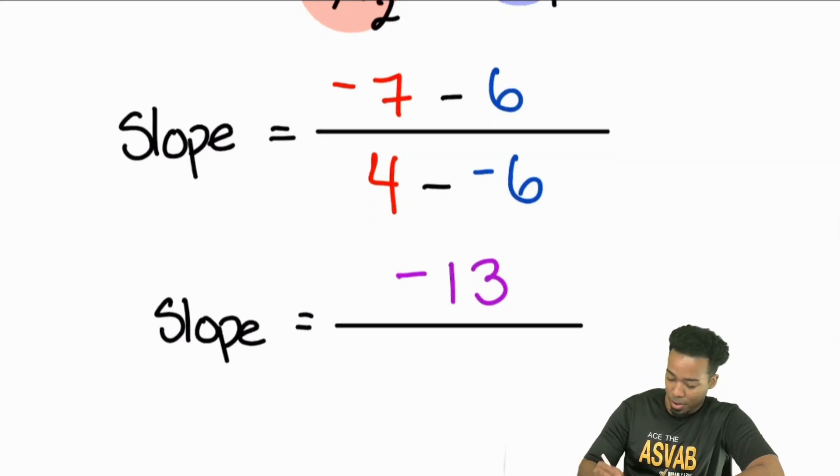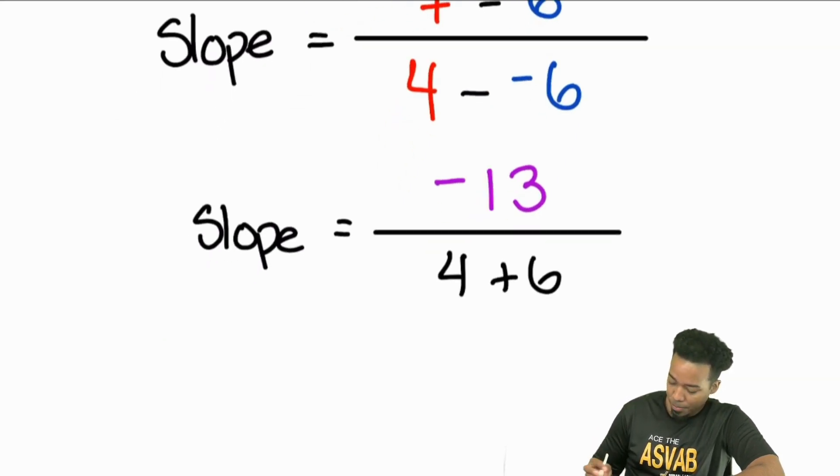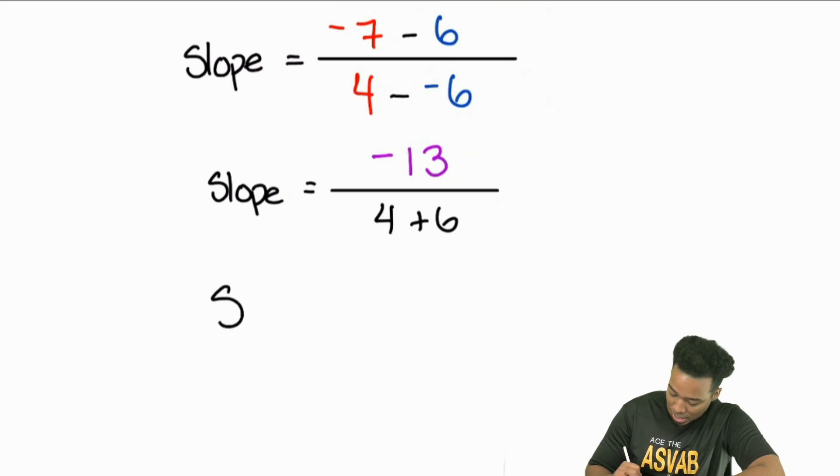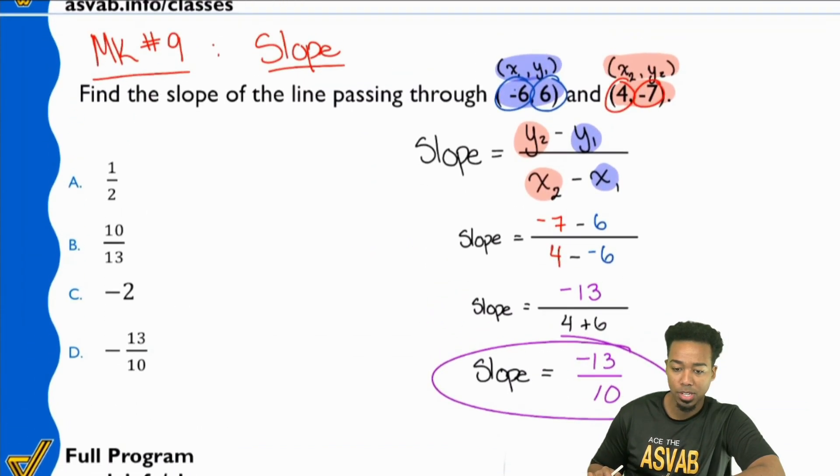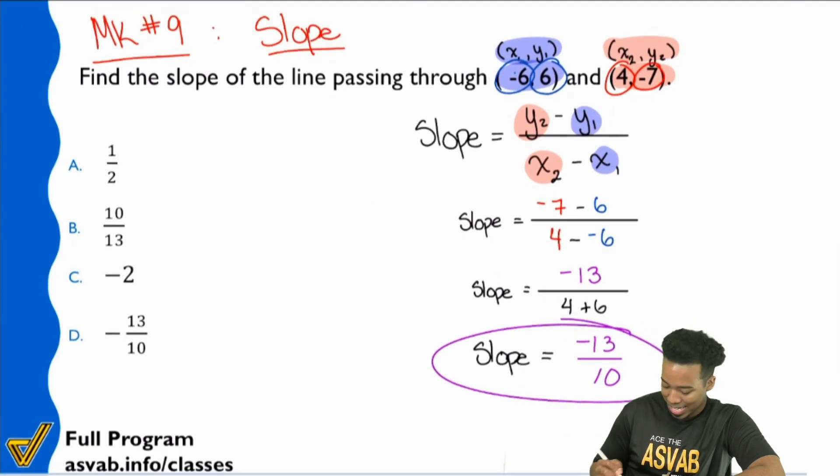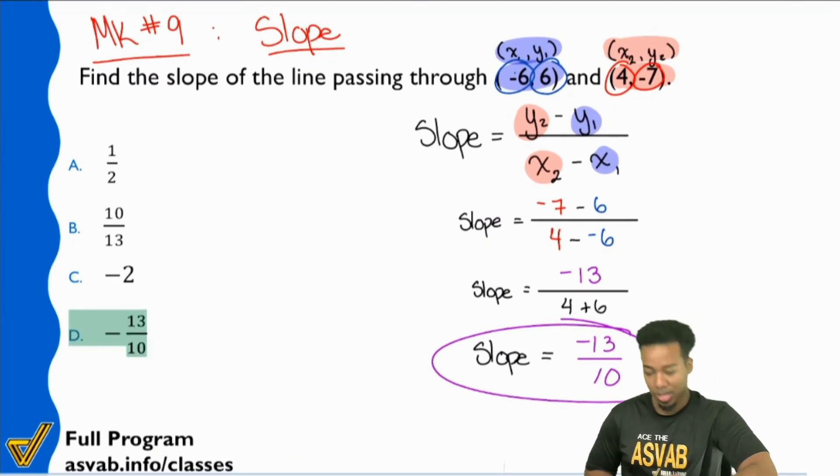And then we're going to have 4 minus negative 6, which is the same thing as saying 4 plus 6. And 4 plus 6 is 10. So my final answer here is going to be negative 13 over 10. And that's our answer. Negative 13 over 10. And we choose D as the correct answer.